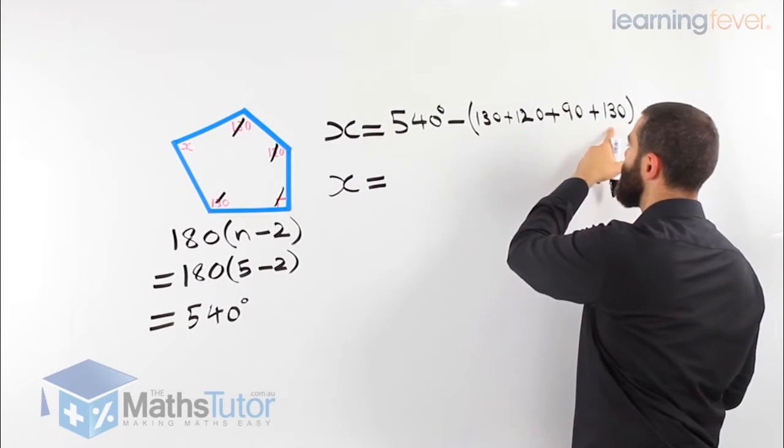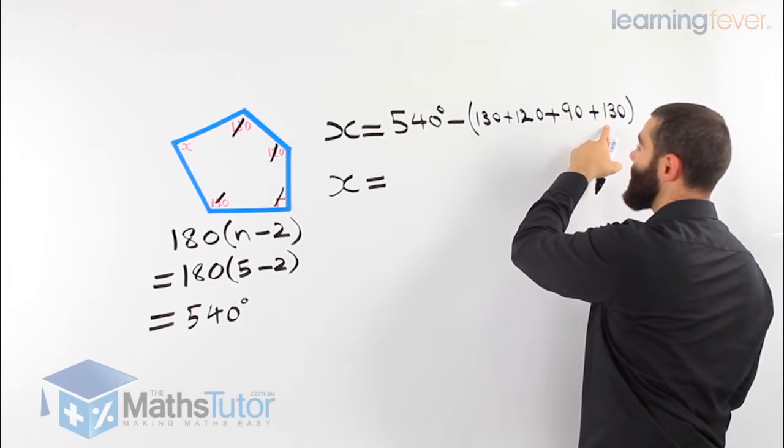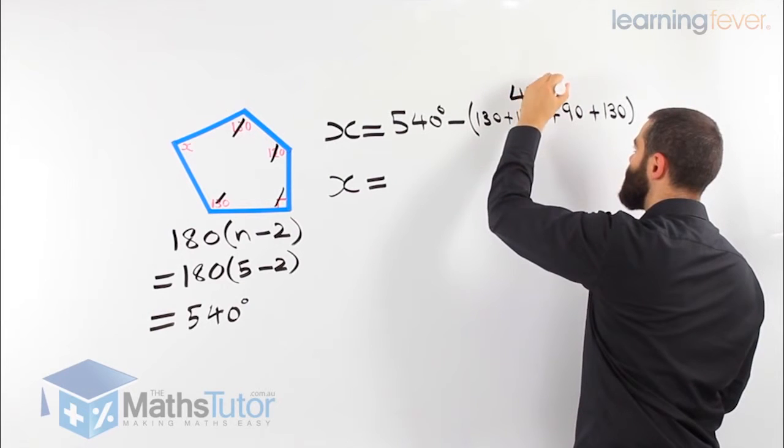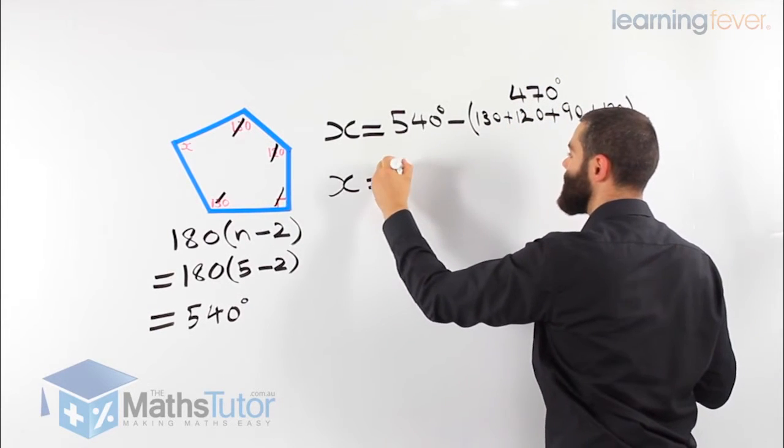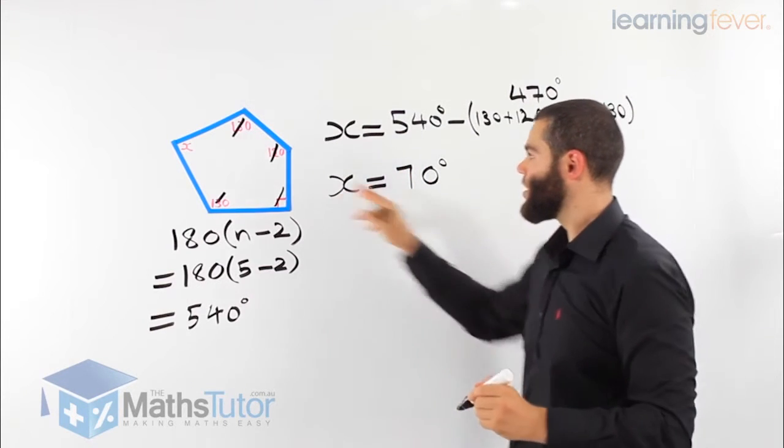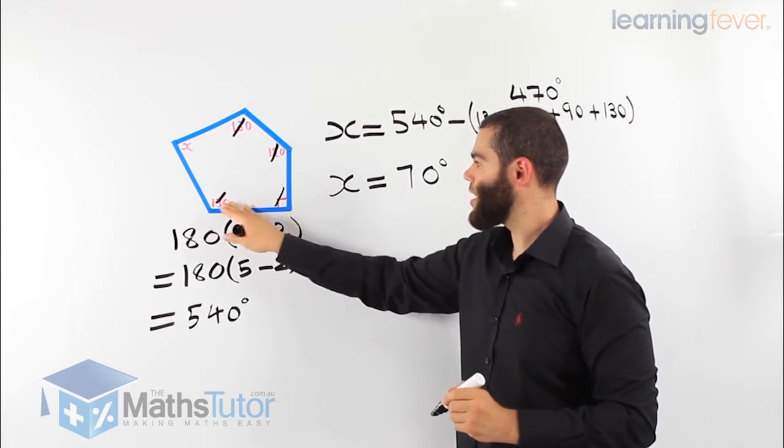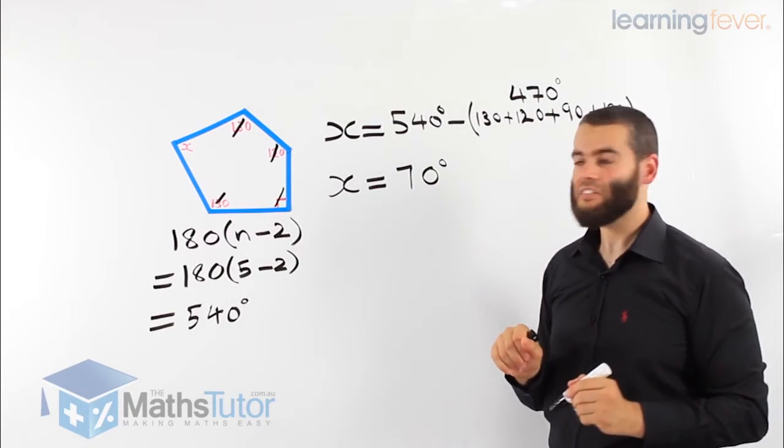So when we work them out, 130 plus 120 plus 90 plus 130, the total is 470 degrees. 540 take away 470, our answer is 70 degrees. So x is 70 degrees, because we've taken away all the other angles from the total, which is 540, and we found x is 70.